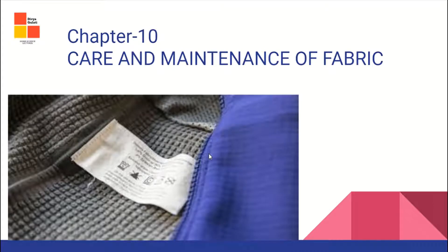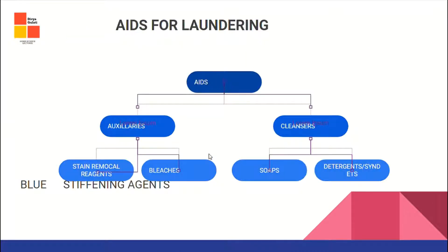Let's start with Chapter 10: Care and Maintenance of Fabric Aids for Laundering. When we are washing clothes — removing stains, making clothes shinier and brighter, removing dust — we require cleansers and auxiliary aids. Cleansers are the basic aids: soap and detergent. Detergents are also called syndets.